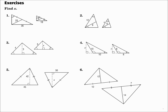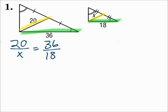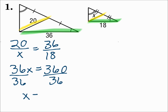Find x for number one. We have two triangles with the medians drawn. Remember, the median goes from a vertex to the midpoint of the opposite side. The medians are proportional to the sides, so let's match pieces up. The median on the left is 20, the median on the right is x. The side on the left is 36, and the side on the right is 18. Set up the proportion: median over median equals side over side. Cross multiply and solve — x is 10.